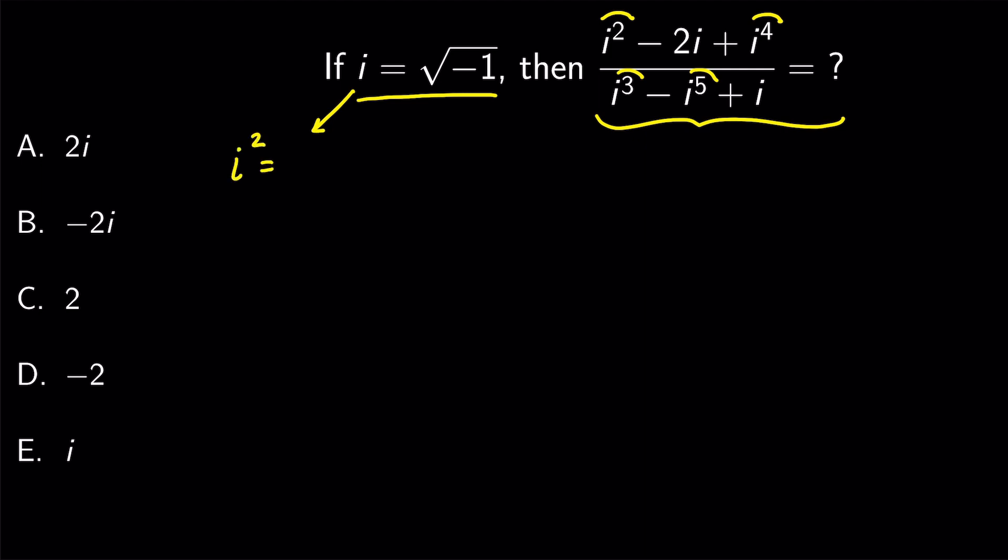i to the power of 2 gives us minus 1. i to the power of 3 can be written as i squared times i. We know that i squared equals minus 1, so we get minus i.